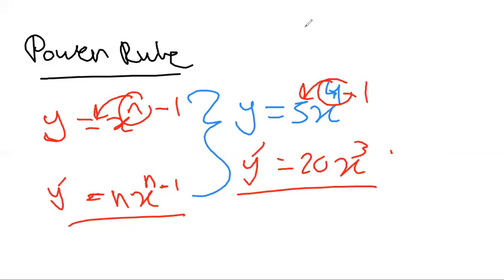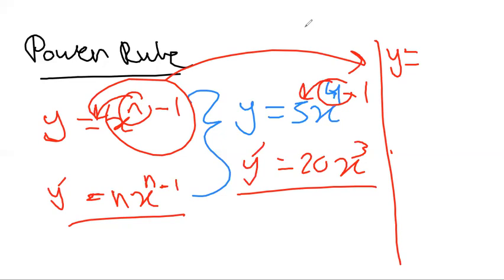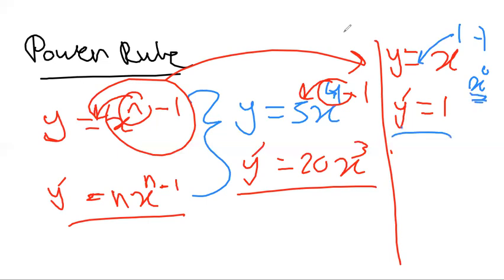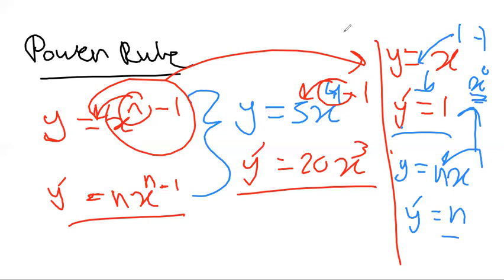From the power rule we can derive some shortcuts. If y equals x, the derivative is 1, because x has power 1; taking 1 down and subtracting 1 gives x⁰ which is 1. If y equals nx, the derivative is just n, because multiplying 1 by n and reducing the power to 0 gives n times 1 equals n.